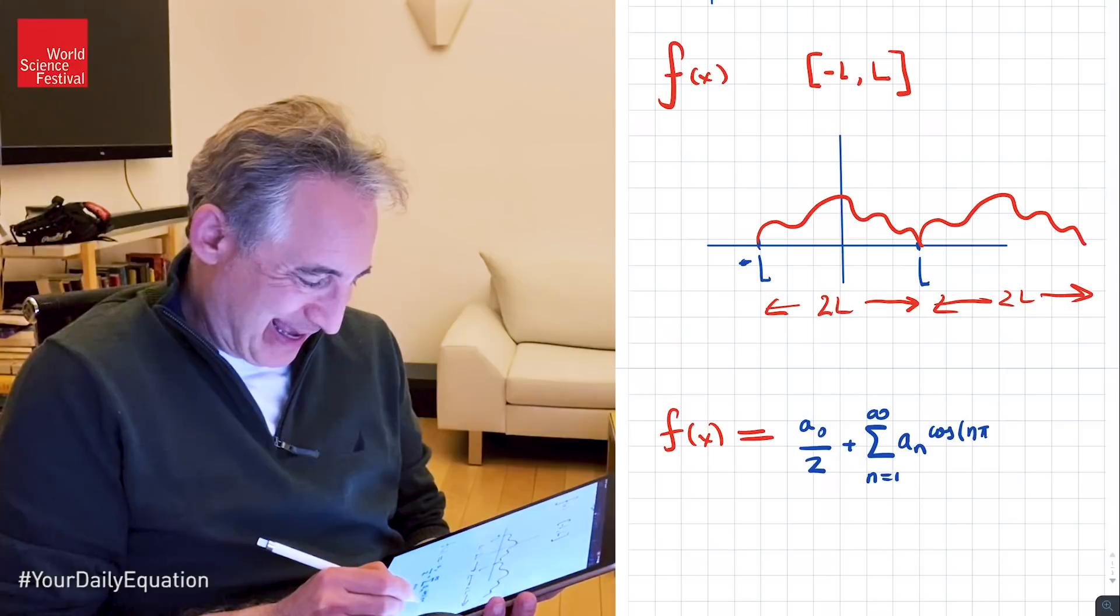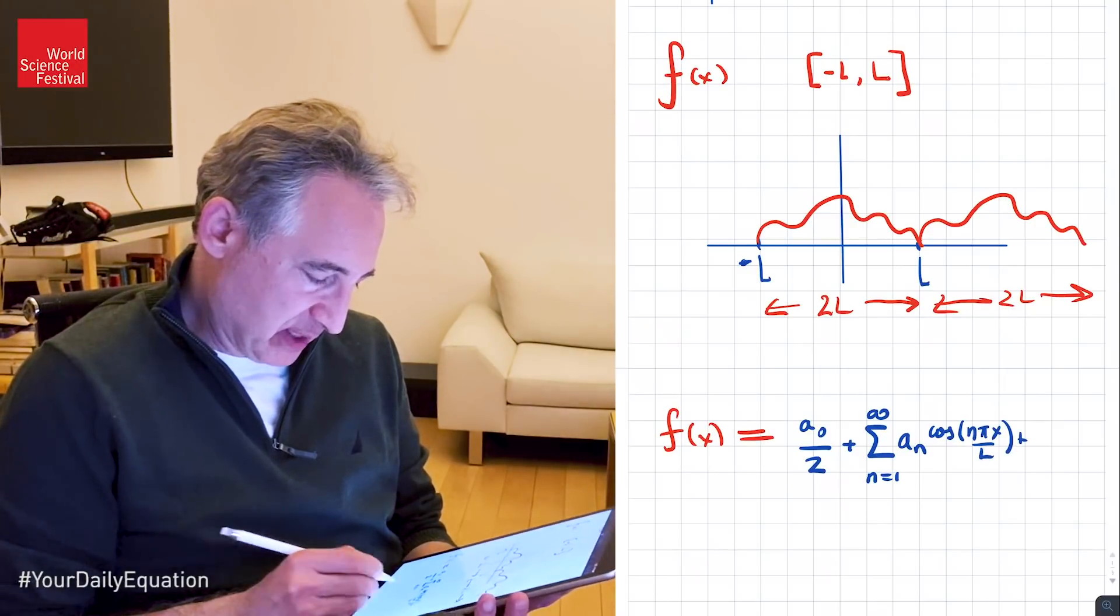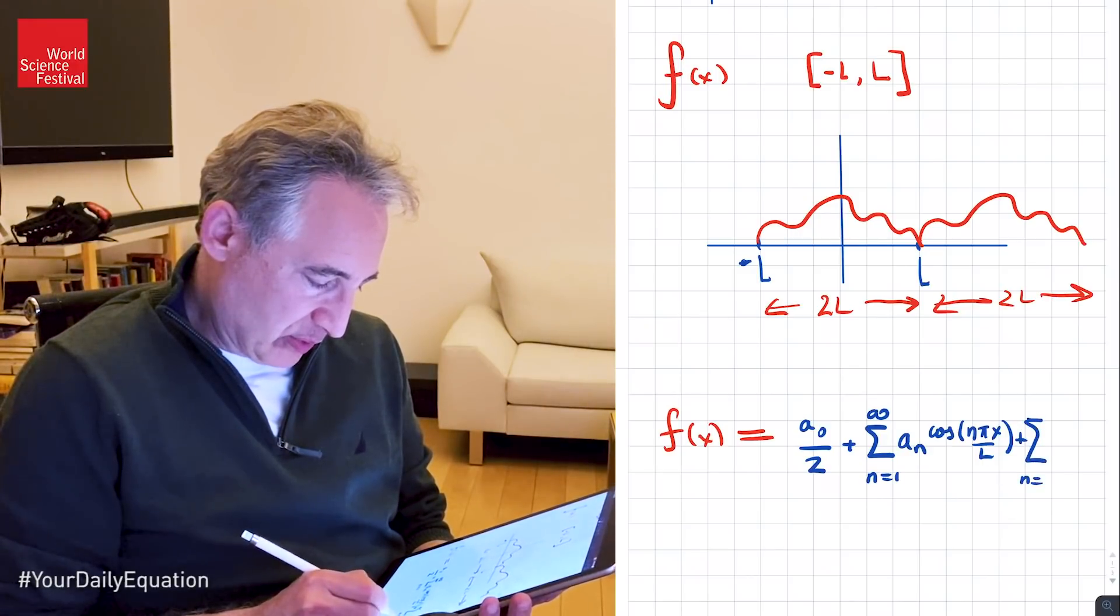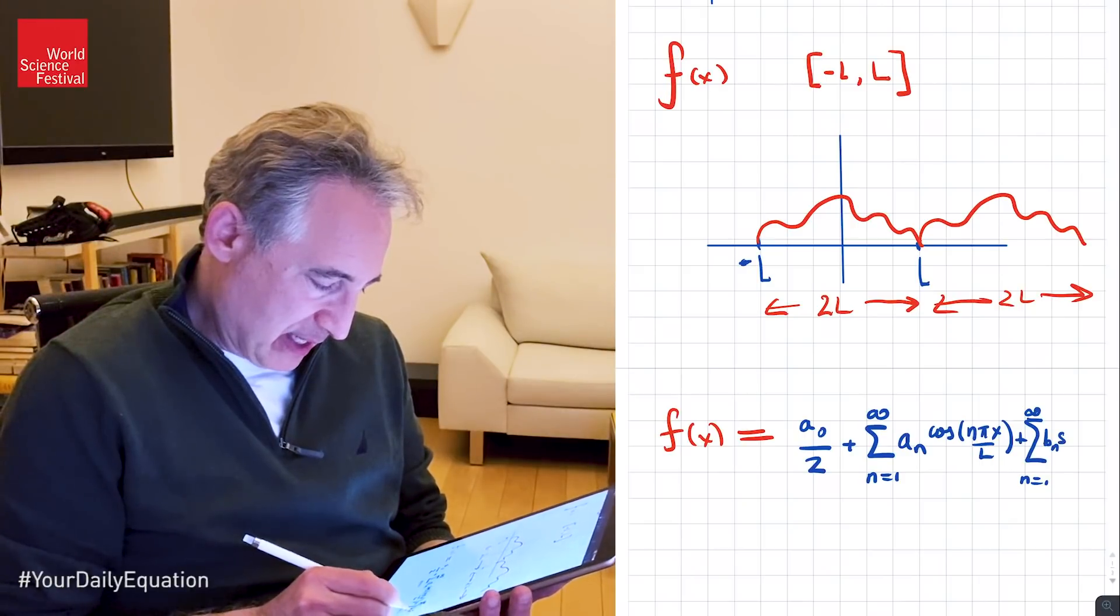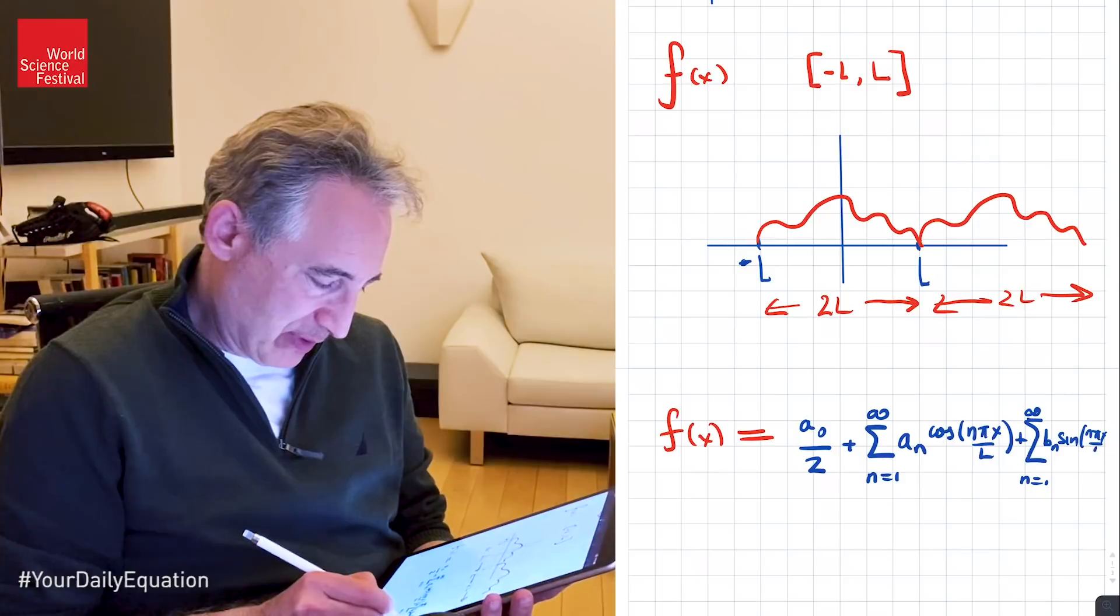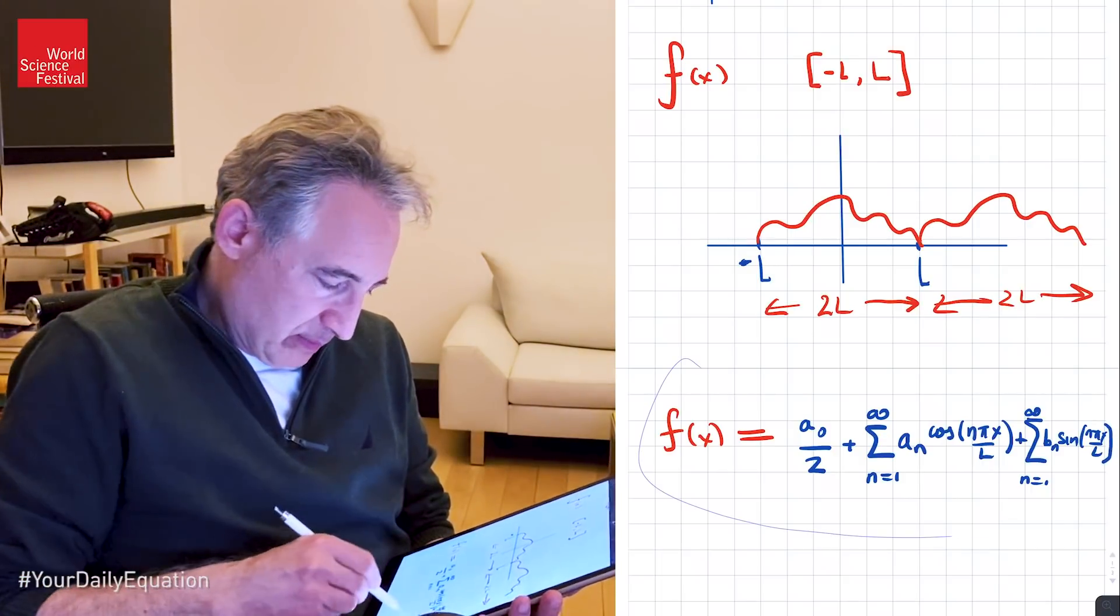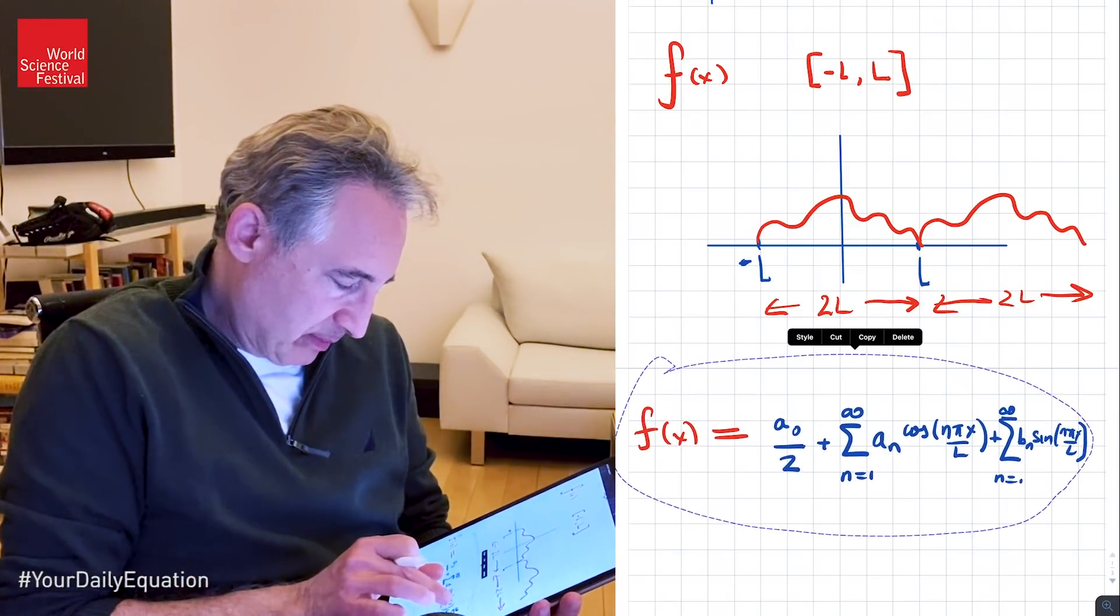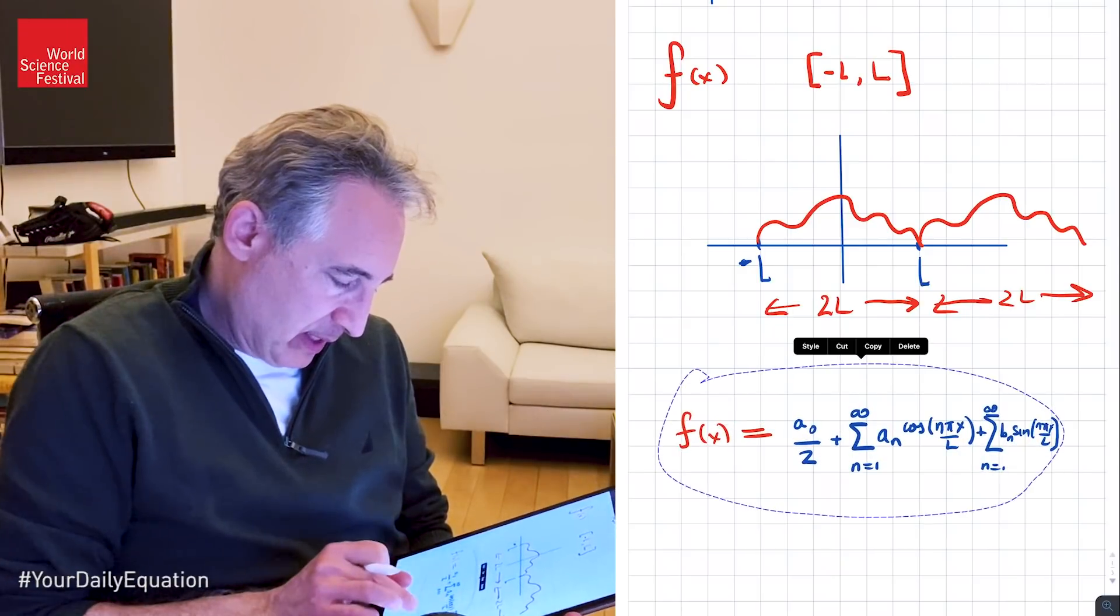So it can be written as a number, just a coefficient, usually written as a naught divided by 2, plus, and here are the sums of the sines and cosines. So n equals 1 to infinity, a_n—I'll start with the cosine part—cosine, and here look at the argument, n pi x over L. I'll explain why in half a second it takes that particular strange looking form, plus the summation n equals 1 to infinity, b_n times sine of n pi x over L. Boy, that was squeezed in there, so I'm actually going to use my ability to just kind of squeeze this down a little bit, move it over, and it looks a little bit better.